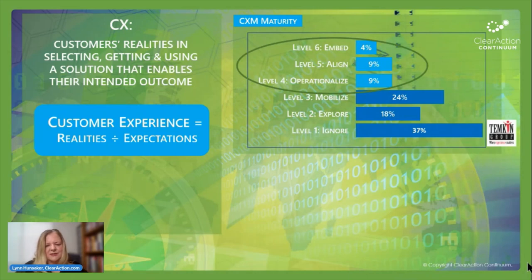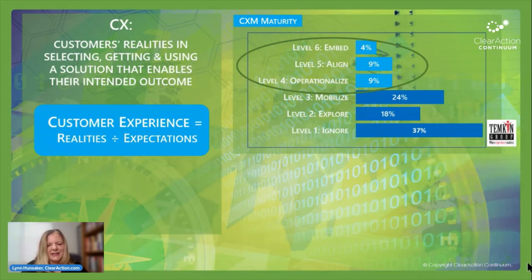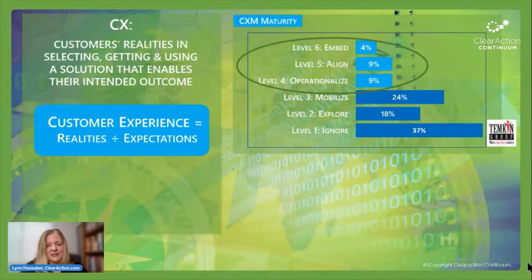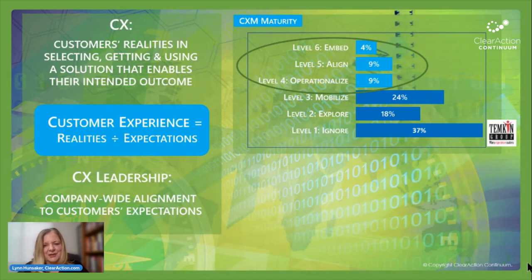In order to do that, we need to remember that the customer experience maturity scale is where we're mobilizing. That's where people are now — they're collecting data and doing things with the data, but they're not necessarily making it a way of life by operationalizing. They're not really aligning the data to each group that needs to find it relevant and resonant for them, and we're not really embedding these customer experience insights into the way of life across the company. If we are focused on these levels, we will present data in a way that helps us achieve that.